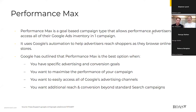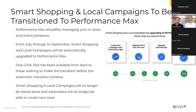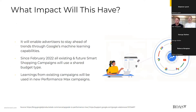Performance Max is key in unlocking new audience segments by using Google's real-time understanding of user intent, behavior, and context to increase ad relevance. For advertisers with a website and physical location, Performance Max aims to simplify managing your in-store and online presence. From July through September, Smart Shopping and Local campaigns will be automatically upgraded to Performance Max, though a one-click transition tool has been available since April. Once completed, Smart Shopping and Local campaigns will no longer be standalone and advertisers will not be able to create new ones.